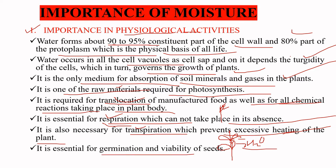Water is essential for the germination and viability of seeds. A seed requires a particular amount of moisture for its germination. Viability is the potential of a seed to germinate, and it is also dependent on water. Seeds which contain a higher amount of water will have lesser viability as compared to seeds which contain a low amount of water.